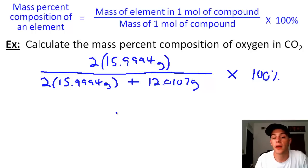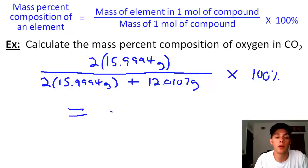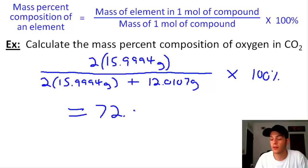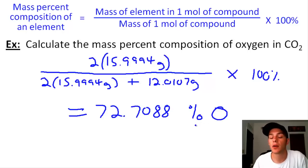I always encourage you to do these calculations yourself before moving on. The final answer is 72.7088% oxygen. That is how you calculate the mass percent composition of an element in a compound.